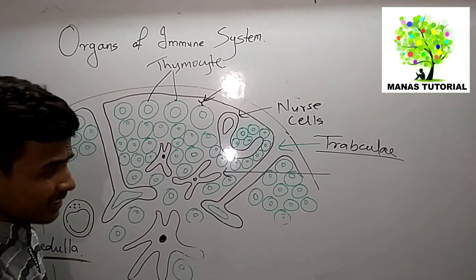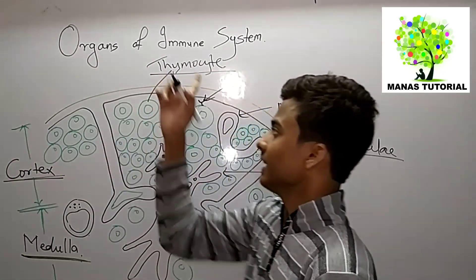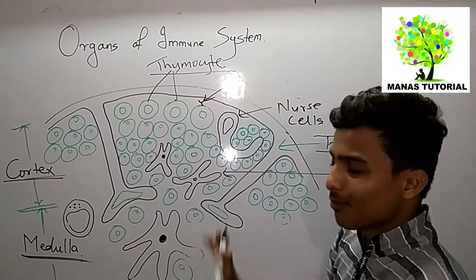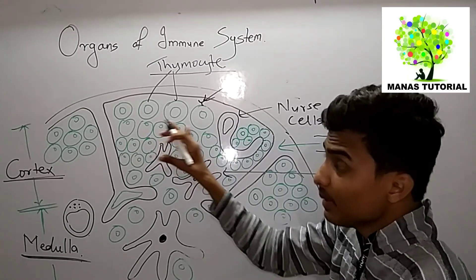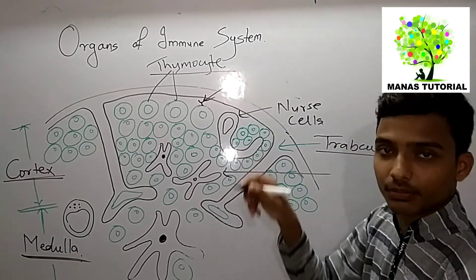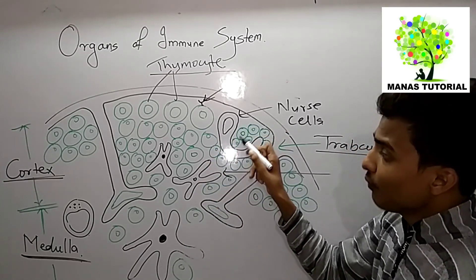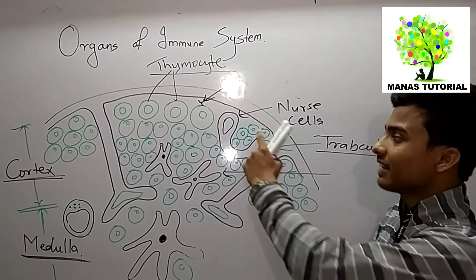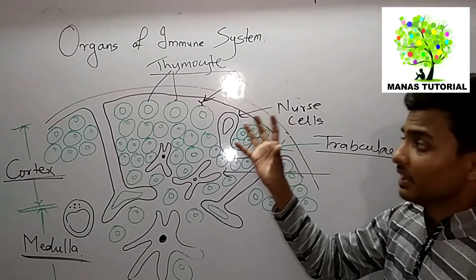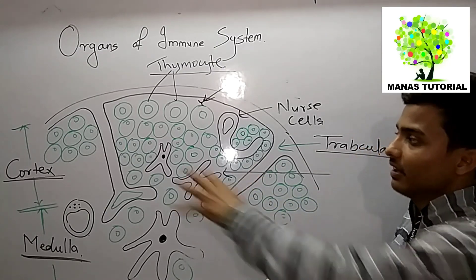In the cortex region there is a large number of thymocytes, which are immature cells. In the medulla the number of thymocytes is less. Along with thymocytes, there are some cells which have extra membrane extensions, and around these extensions approximately 40 to 50 thymocytes are clustered. These cells are known as nurse cells, and the nurse cells and thymocytes form a complex in this region.